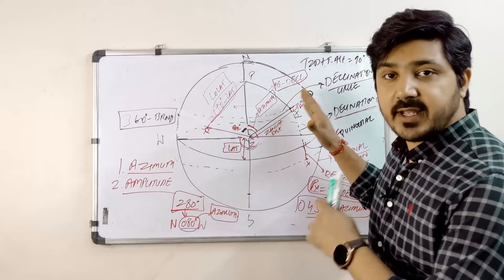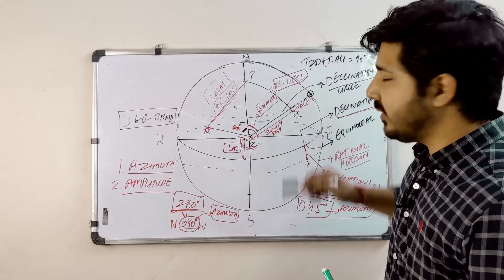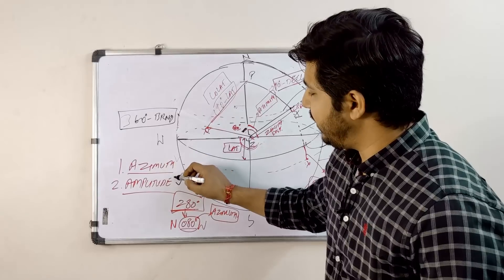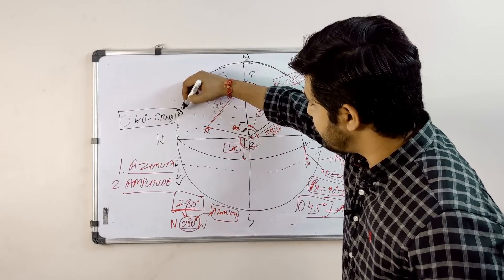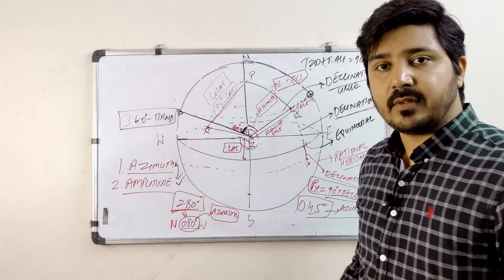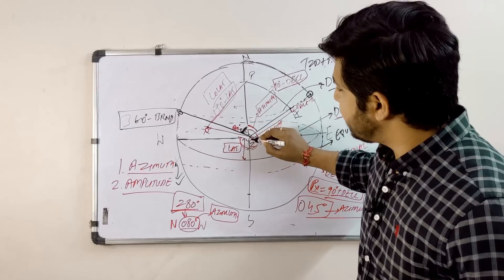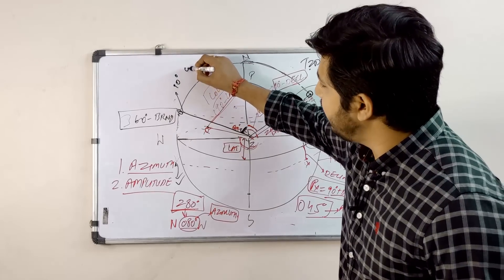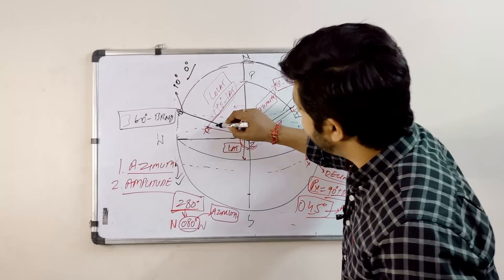The second term is amplitude. When the body is on the rational horizon — that is, rising or setting — the bearing you take at that moment becomes amplitude. In simple terms, amplitude is azimuth but only when the body is on the rational horizon. At that point angle Z becomes amplitude. The special condition here is that zenith distance ZX becomes 90 degrees and true altitude becomes zero.